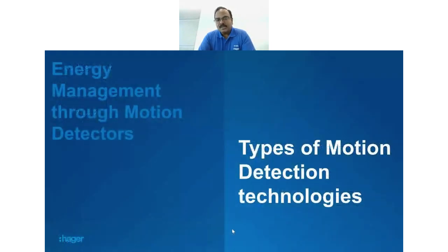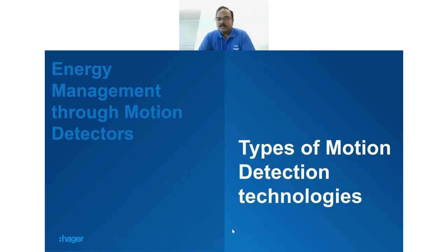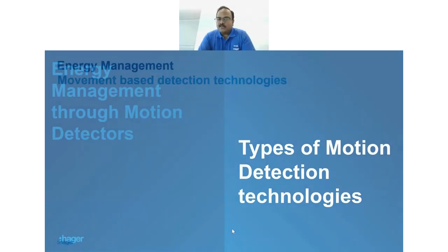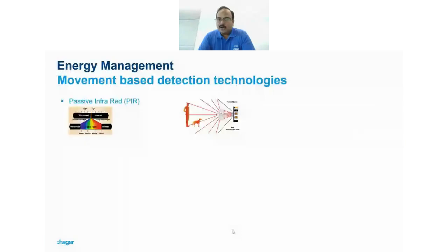We start by understanding the types of motion detection technologies available — approximately 90% of those commercially used. The first one is Passive Infrared (PIR) technology.